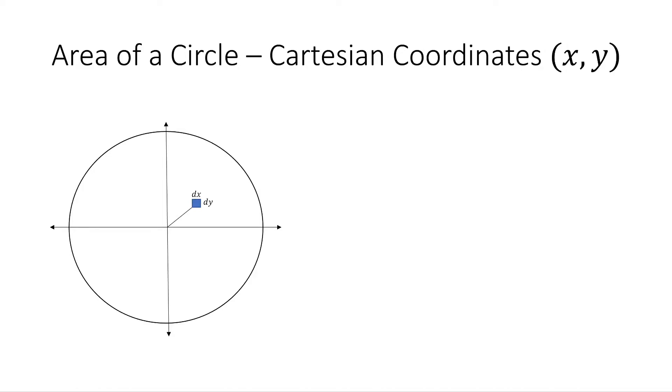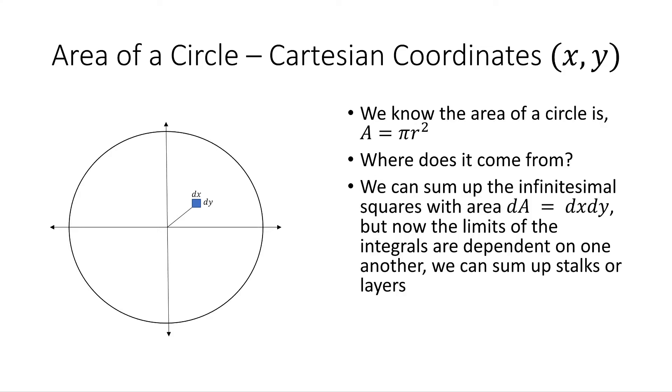So we know that the area of a circle is pi r squared. But where does this come from? If we think about the tiny little square that has an infinitesimal area piece, dx dy, we can sum up all those squares as we move around the circle and get the area of the circle.